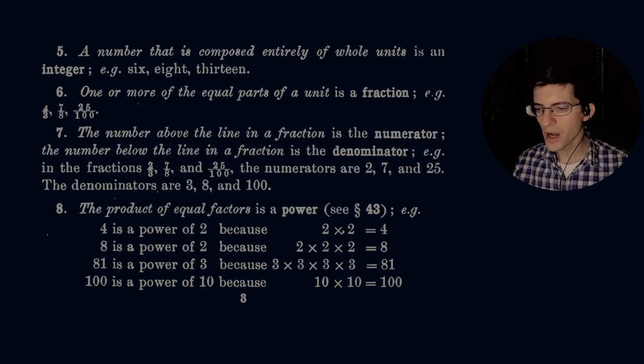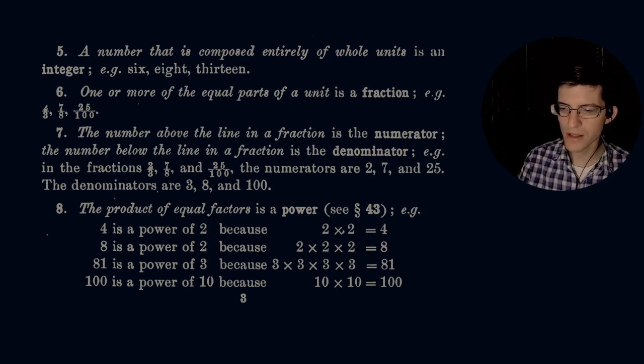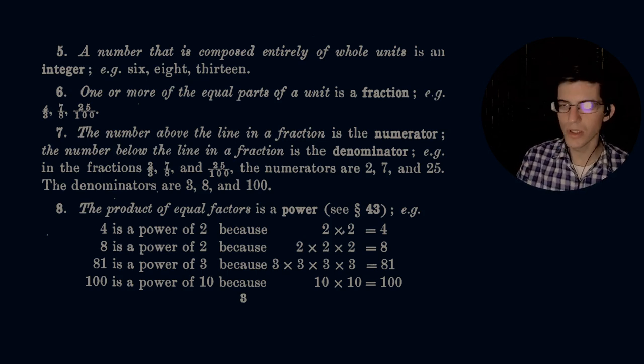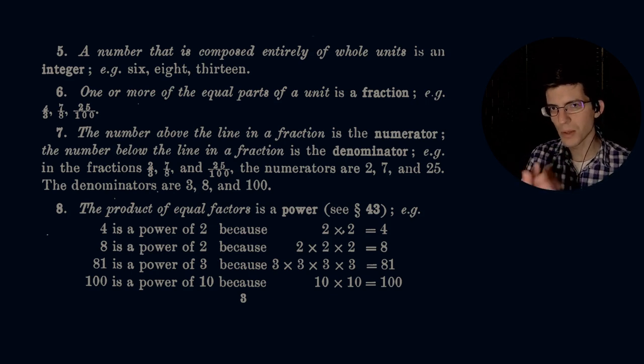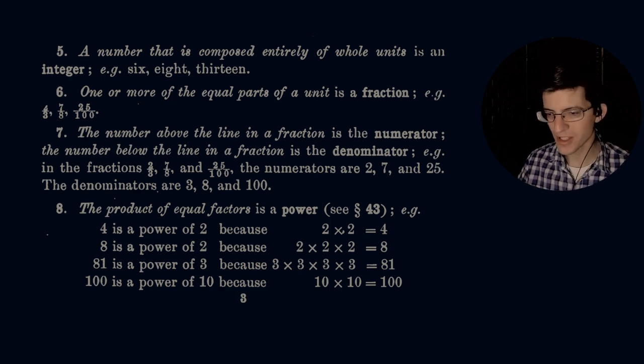Number seven: the number above the line in a fraction is the numerator. The number below the line in a fraction is the denominator, e.g. in the fractions two thirds, seven eighths, and 25 elevenths, the numerators are 2, 7, and 25. The denominators are 3, 8, and 11. The denominator will be some complete unit and then the numerator will be a portion of that.